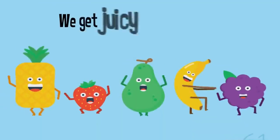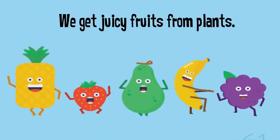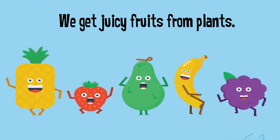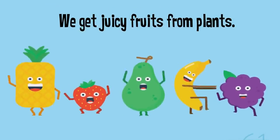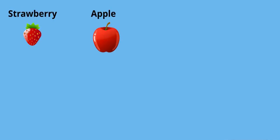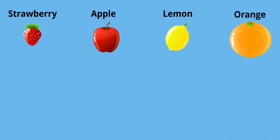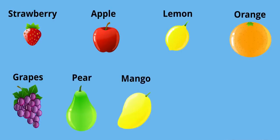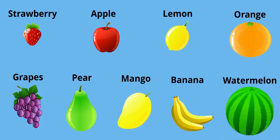We get juicy fruits from plants such as strawberry, apple, lemon, orange, grapes, pear, mango, banana and watermelon.